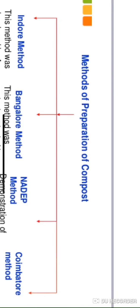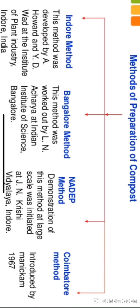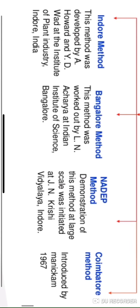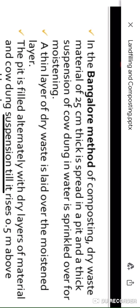There are different methods for the preparation of compost: the Indore method, Bangalore method, and Nander method. Out of these, the two most popularly used methods in India are the Indore method and the Bangalore method. We will now discuss each of these two methods.